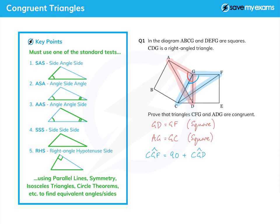And then from the red triangle, we can say that AGD is equal to 90 (that's the right angle from the bigger square) plus the same angle CGD. And so that allows us to say that CGF is equal to AGD.